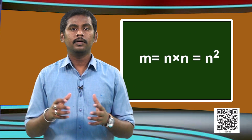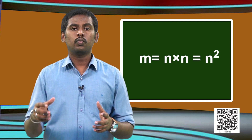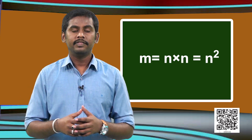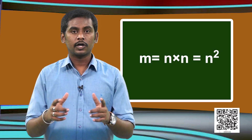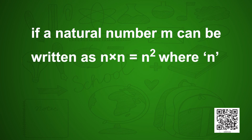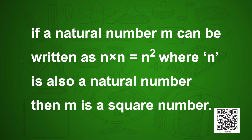In general, if we have a natural number m, and if we can write m as the product of n with itself — that is, m = n × n = n squared — where n is also a natural number, then we say that m is a square number.